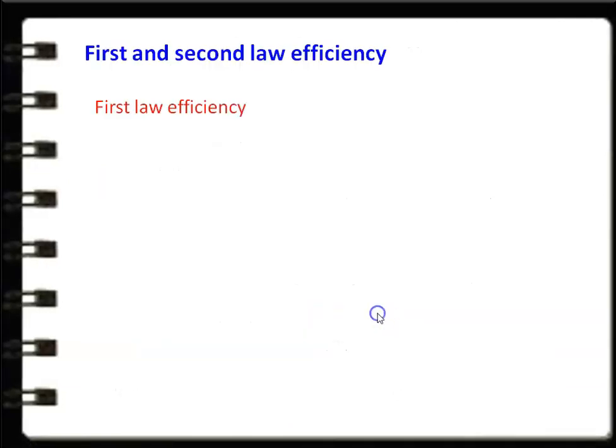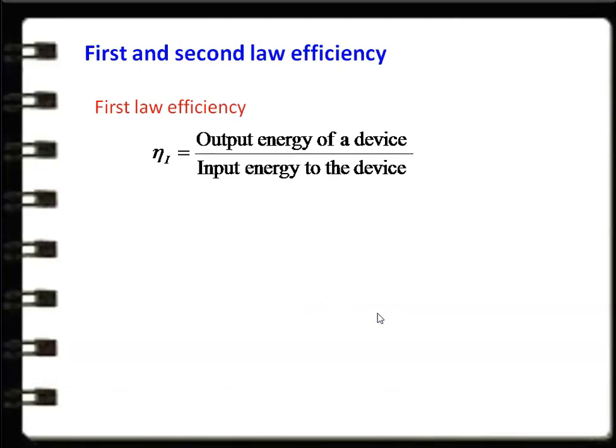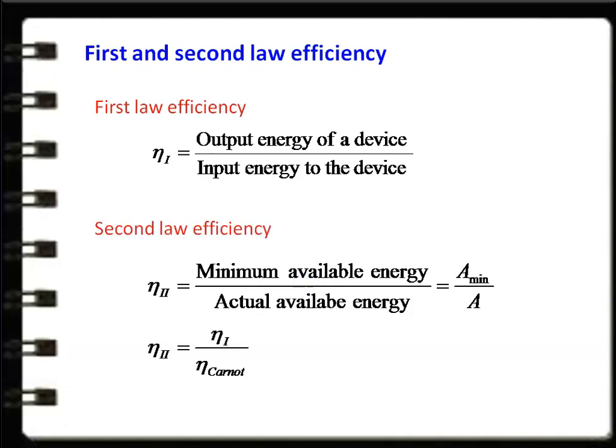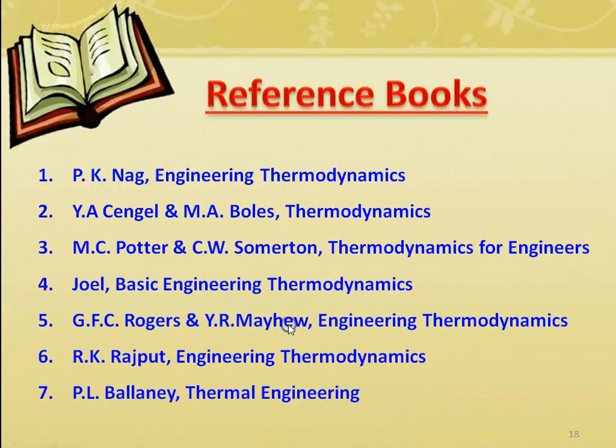The first law efficiency is defined as work output divided by heat supply — the output energy divided by the input energy of the device. The second law efficiency is the ratio of first law efficiency to the Carnot efficiency (theoretical efficiency). Second law efficiency = first law efficiency / Carnot efficiency.